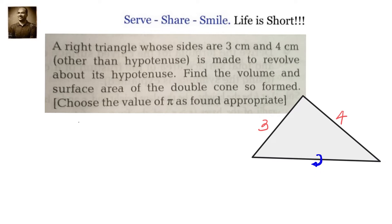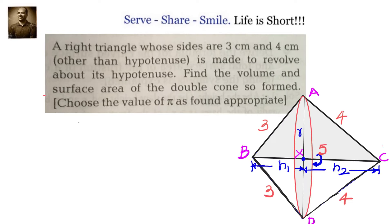It is made to revolve around the hypotenuse. When it is done you can observe that it will be forming a double cone and you will have the respective slant heights of the cones as 3 and 4 and the sum of their heights will be 5 centimeters like this. So we have here a double cone.